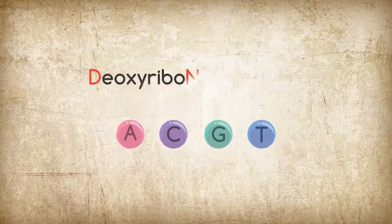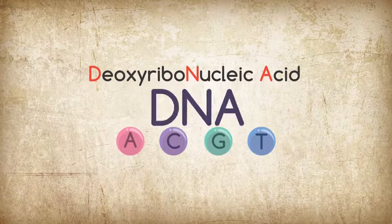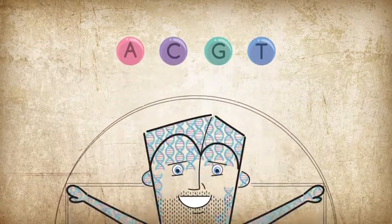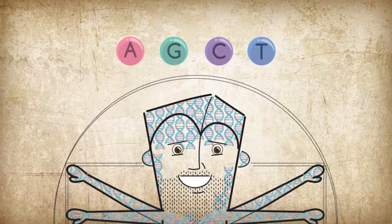These bases are called deoxyribonucleic acids, or DNA. It is the order of these bases that gives you blue eyes or brown eyes and all other traits.